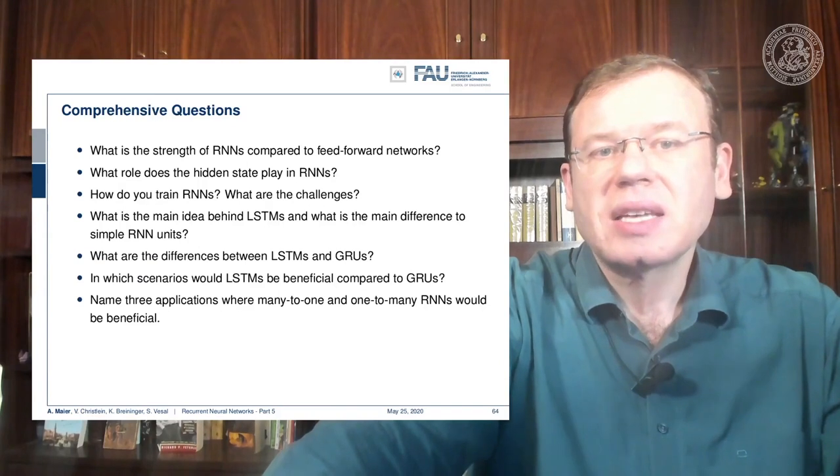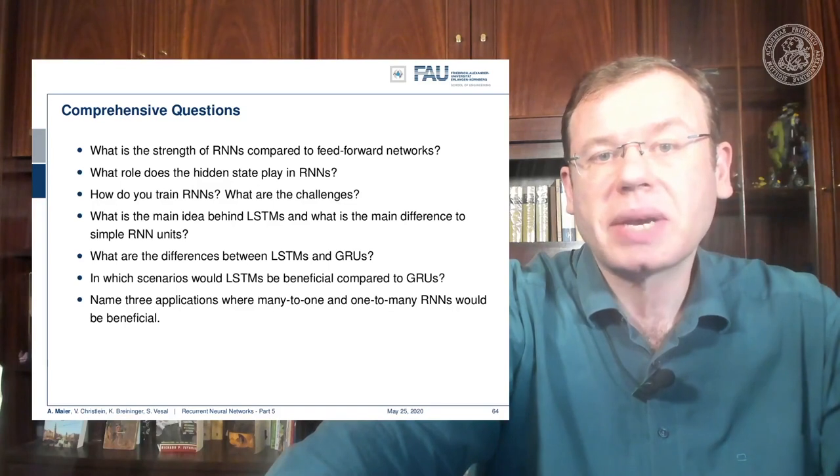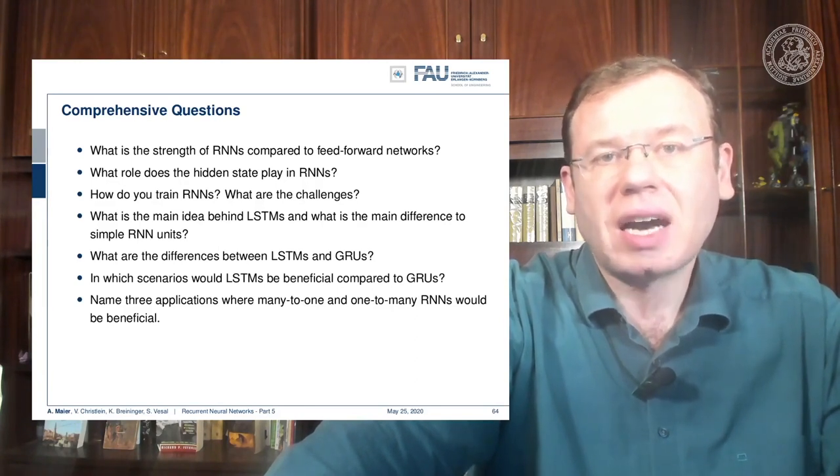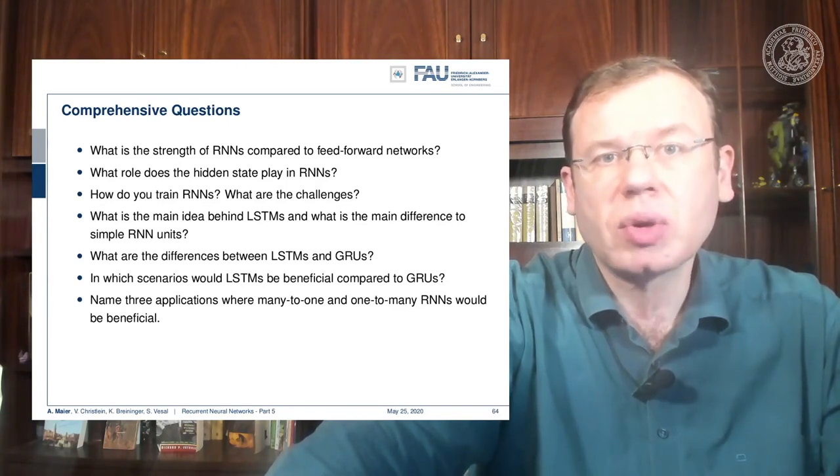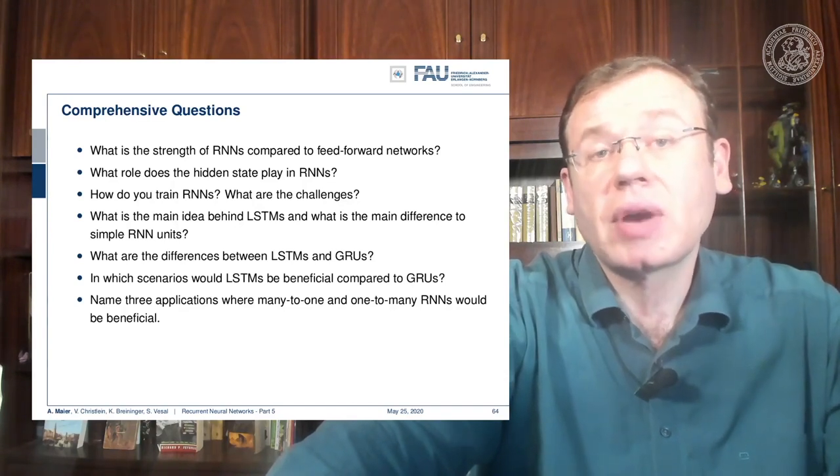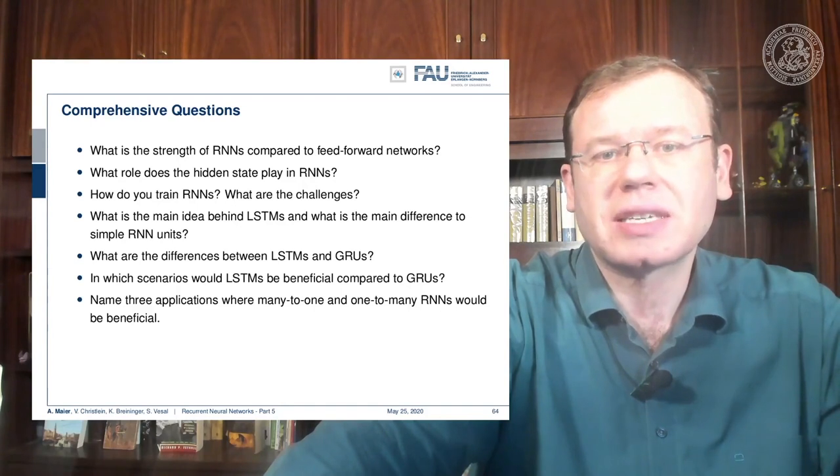I have some comprehensive questions. What's the strength of RNNs compared to feed forward networks? Then of course, how do you train an RNN? What are the challenges? What's the main idea behind LSTMs? You should be able to describe the unrolling of RNNs during training. You should be able to describe the Elman cell, the LSTM, and the GRU. So these are really crucial things that you should know if you have to take some tests in the very close future, so better be prepared for questions like these.